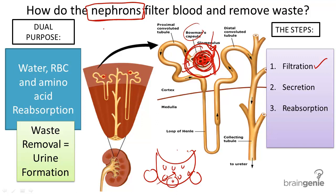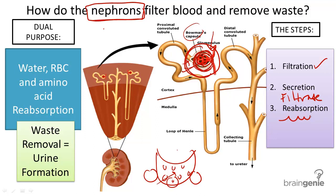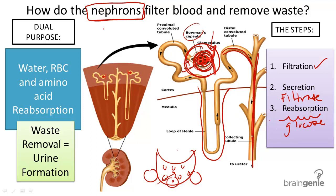The second and third processes, known as secretion and reabsorption, modify what was forced into the nephron. What has already entered the nephron is called the filtrate. Glucose and amino acids are always reabsorbed back into the blood, while other substances are more regulated based on how much the body needs. Water, for example, is also reabsorbed. This occurs in the long loop of Henle, the distal convoluted tubules, and the collecting tubules, where water and glucose are mainly reabsorbed — mostly water.